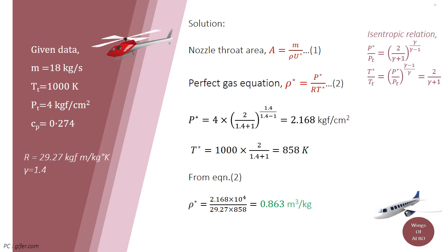Then write T star divided by T subscript T is equal to P star divided by P subscript T to the power gamma minus 1 divided by gamma, and which is also equal to 2 divided by gamma plus 1.